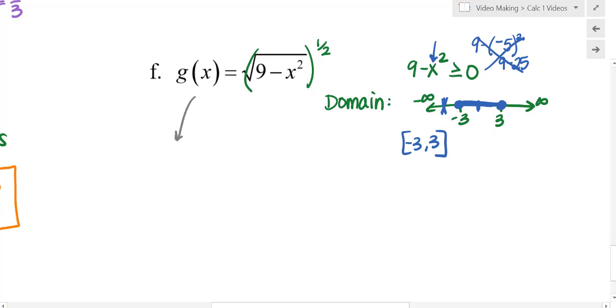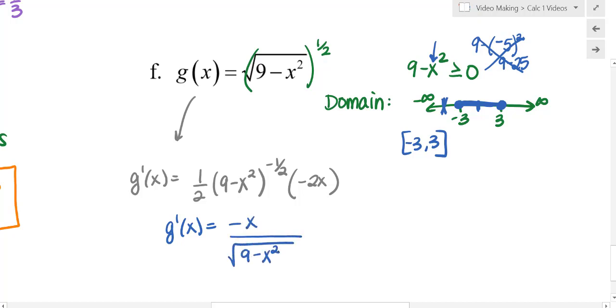So we have that domain. Let's go ahead and find g prime. I'll bring down my exponent. I'll keep my base the same, subtract one, chain rule or times the derivative of what's inside. I'll clean it up a little bit before I do the derivative domain. So that'll be negative x over square root nine minus x squared. Because you have one half of negative two x, that gives you the negative x in the numerator, then the nine minus x squared being raised to the negative one half puts the square root in the denominator.